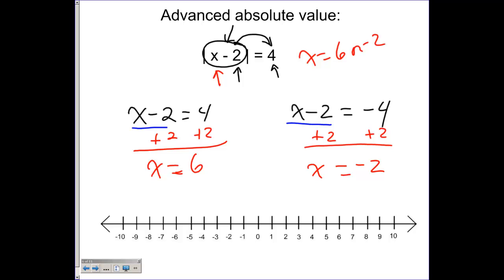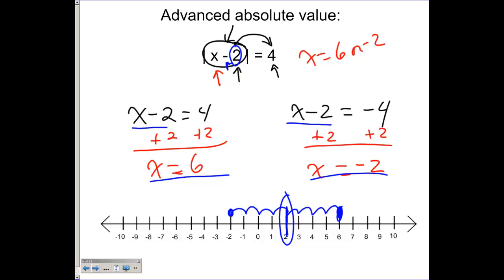Here's how we'd see this on a number line. We said the starting point was two — notice it's the opposite of the negative sign in x minus two. Starting at two and going four units up lands on six; going four units down lands on negative two. The starting point is always going to be the opposite of what you see in the expression — there's a negative two inside, but the starting point is actually positive two.